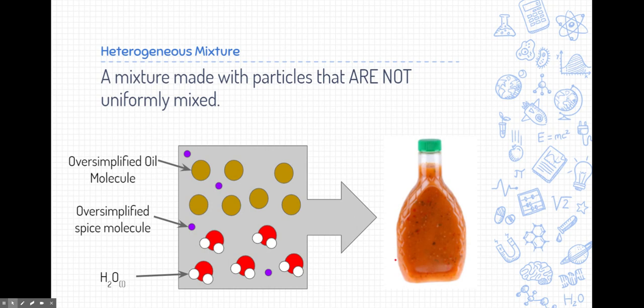They're not uniform, and you would even have to shake it. But if you look at this particle here, you can see there's chunks of spices up here that don't appear down here. This mixture is not uniform at all. And so we would call this a heterogeneous mixture.